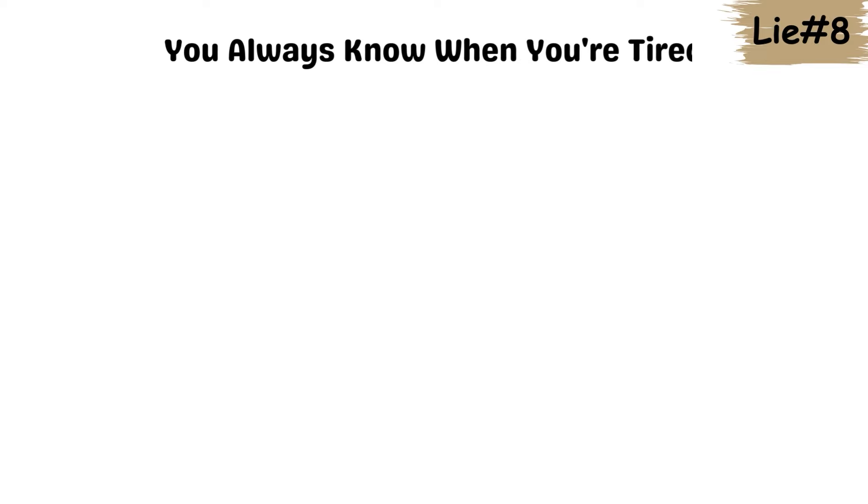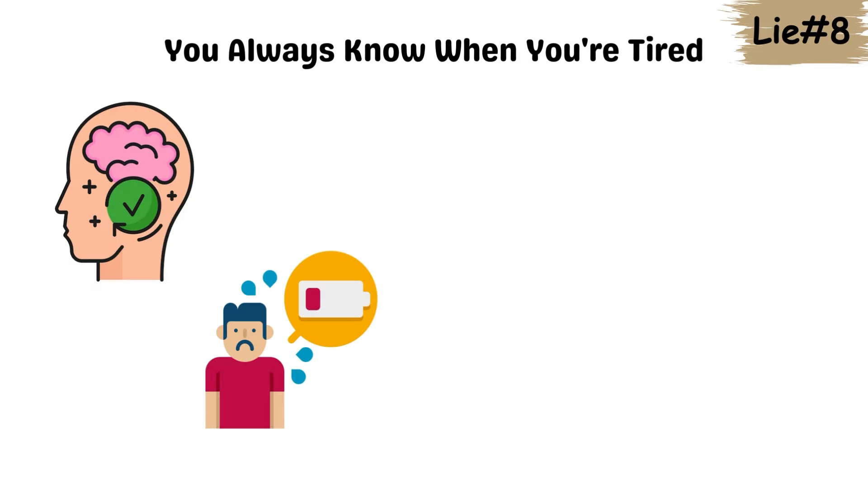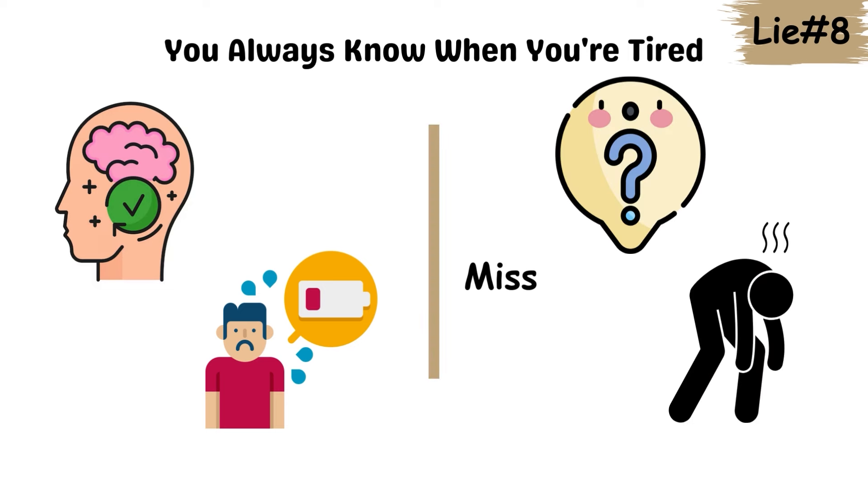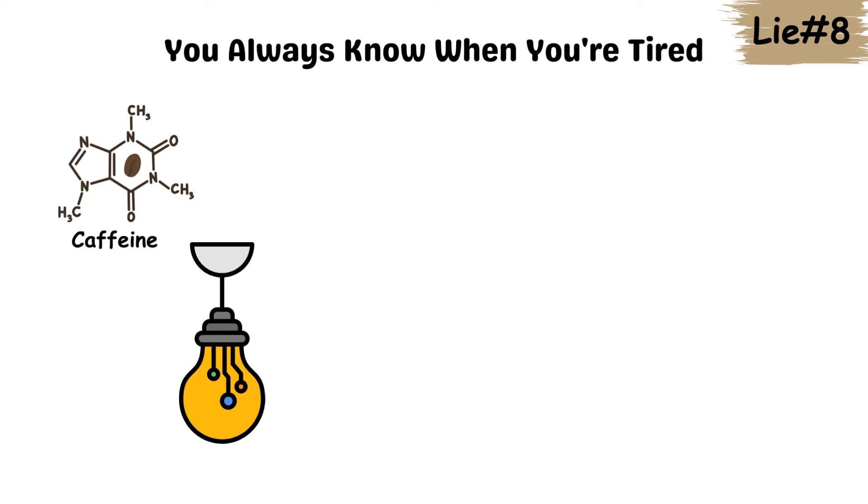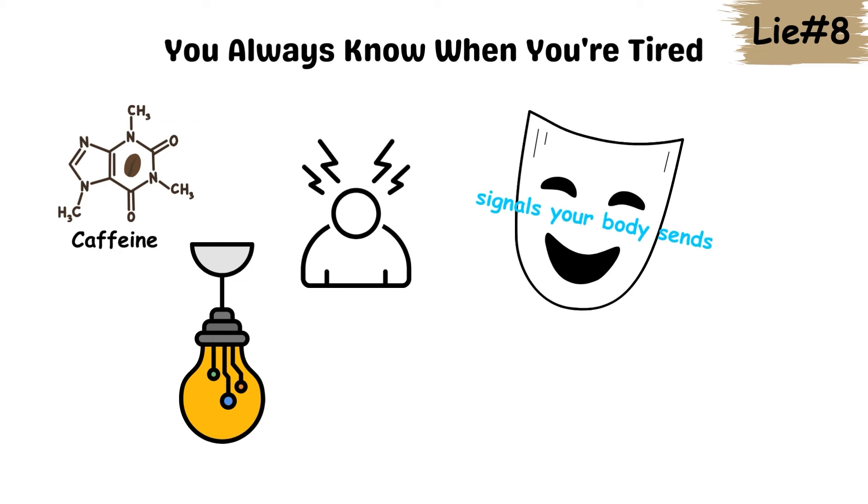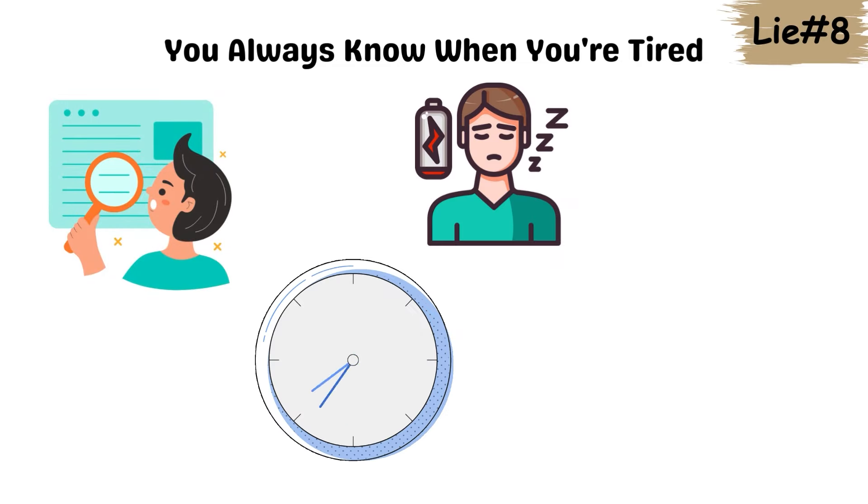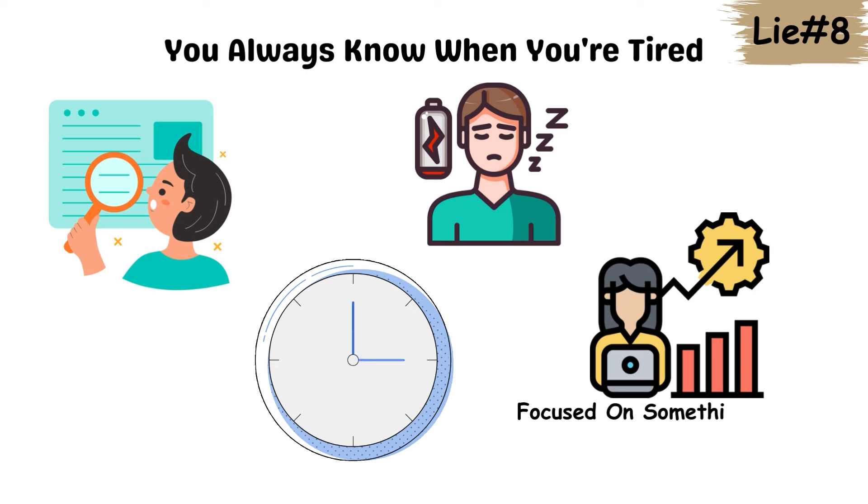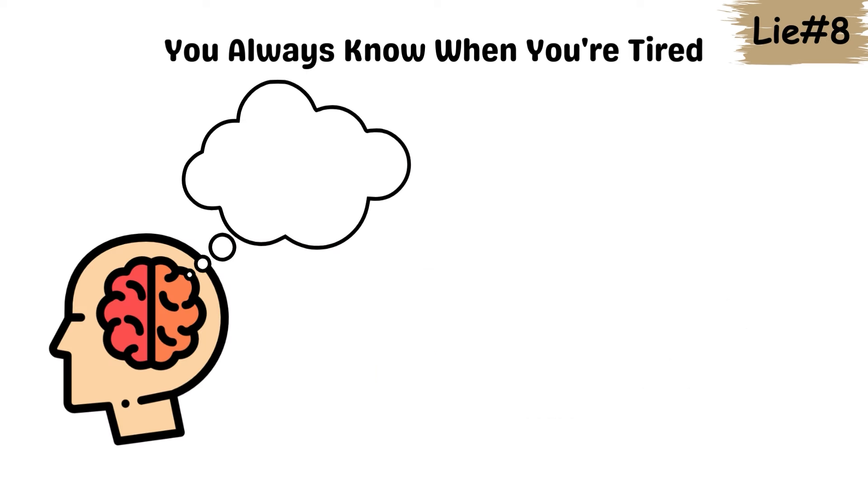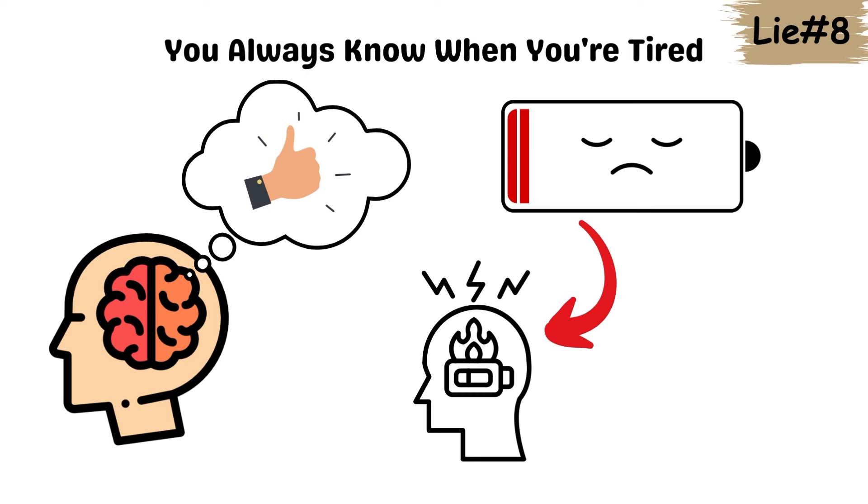Lie 8. You always know when you're tired. Your brain convinces you that you can feel when you're truly tired. But often, we miss the subtle cues until we're completely exhausted. Caffeine, artificial lighting, and even stress can mask the signals your body sends when you're tired. In fact, research shows that people can go hours without recognizing fatigue, especially if they're focused on something engaging. Your brain tricks you into thinking you're fine, even when your energy levels are actually running low, leading to burnout without warning.